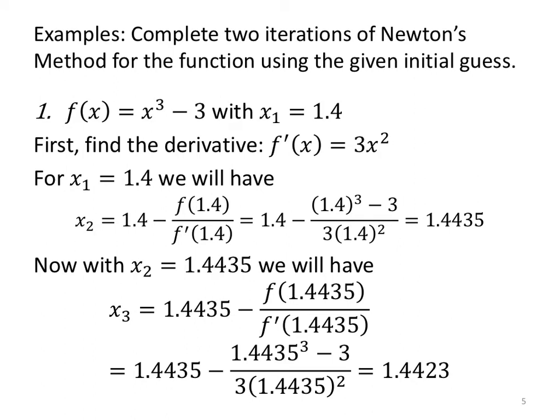Let's complete two iterations of Newton's method for the function using the given initial guess. If f(x) = x³ - 3 with x₁ = 1.4, so 1.4 cubed is pretty close to 3. We're going to find our derivative: f'(x) = 3x². Now for our initial guess of 1.4, our next value x₂ will be 1.4 minus the function evaluated at 1.4 divided by the slope at 1.4. So we'll put 1.4 in everywhere I see an x. If I'm using a calculator, I will put parentheses around both my numerator and denominator so that my calculator knows exactly what it is I want it to do. If you don't use those parentheses, you will get a wrong value. Entering this into your calculator, you'll output 1.4435.